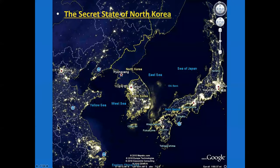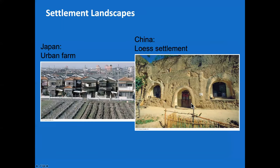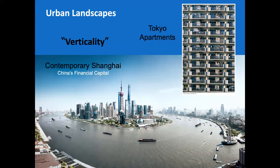Here's North Korea and South Korea seen from space at night — North Korea is basically dark. Compare that to China, South Korea, and Japan. There's the city of Beijing, and this is China's financial capital — the Bund, B-U-N-D — where there's a lot of vertical development taking place.